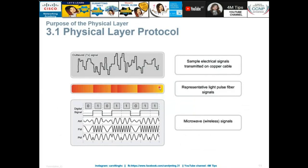Regarding physical layer protocols: copper cable transmits using electrical signals. Fiber optic cable represents data as light pulses — using dark and light colors. Between electrical and light signals, light is faster.